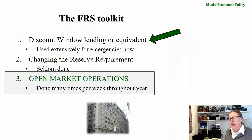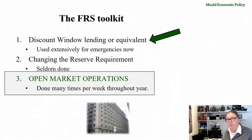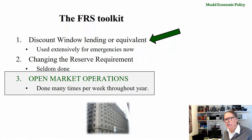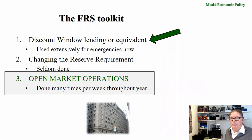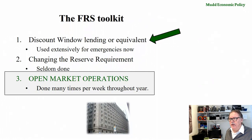The Federal Reserve System has three primary weapons in their toolkit. The first is formally called discount window lending — when banks are able to come to the Federal Reserve System to borrow reserves. Their capacity to lend has been vastly expanded, including lending directly to corporations and others. This is used extensively for emergencies, and is being used on an unprecedented scale for emergencies now. You can't understand how they're doing it until you understand how open market operations work.